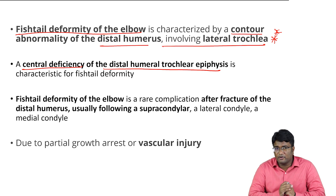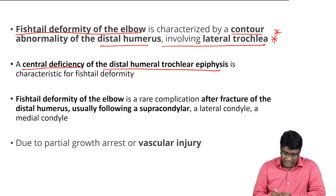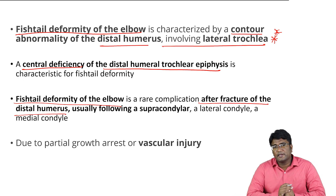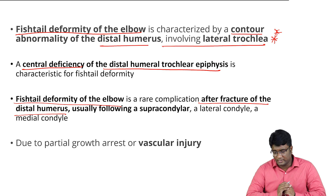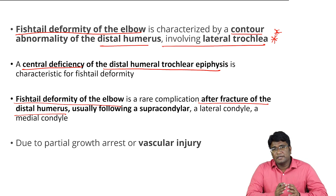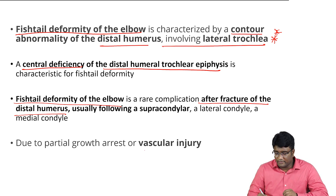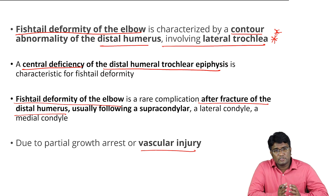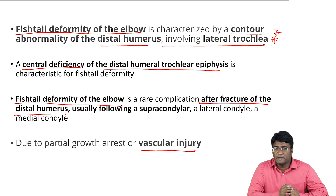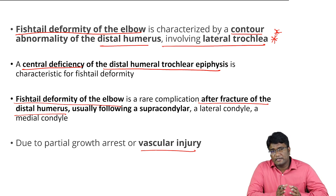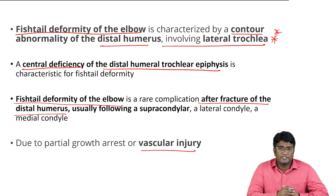Fish tail deformity can occur after any fracture of the distal humerus — generally a supracondylar fracture, but also after lateral condyle or medial condyle fractures. It occurs due to a vascular injury or arrest of the growth plate after distal humerus fractures. The central defect involving the lateral trochlea produces this fish tail deformity.